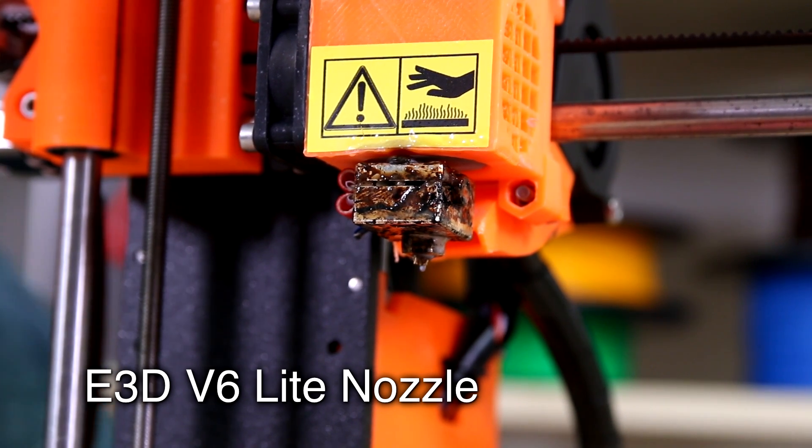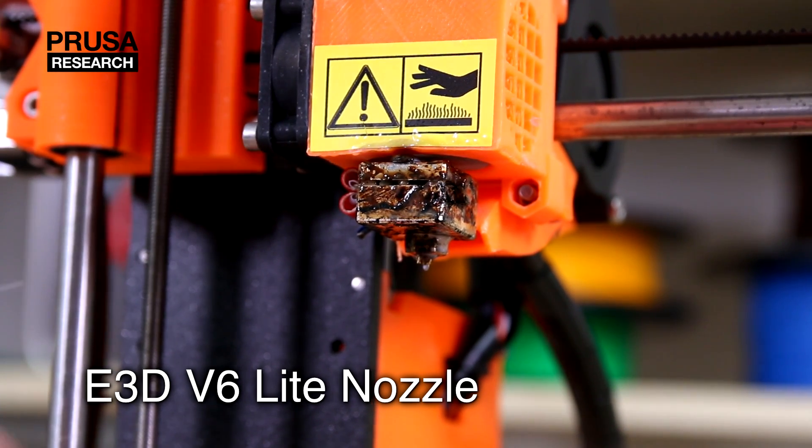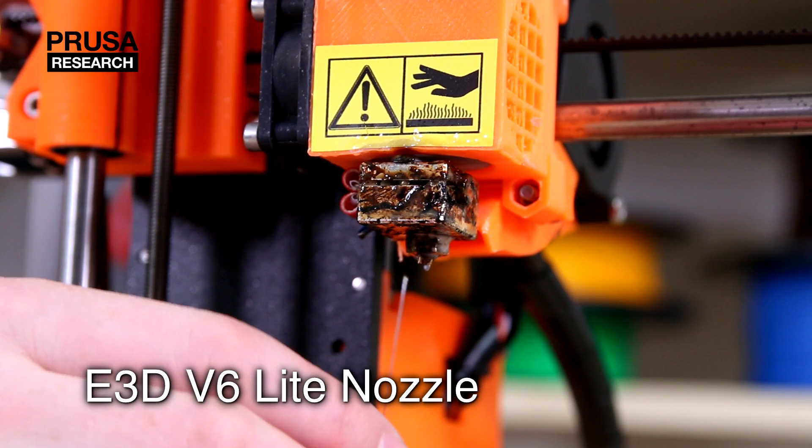Hi guys, in today's video I will show you how to change Teflon tube. This tutorial is intended for our customers. Our printers use the E3D V6 light nozzle.